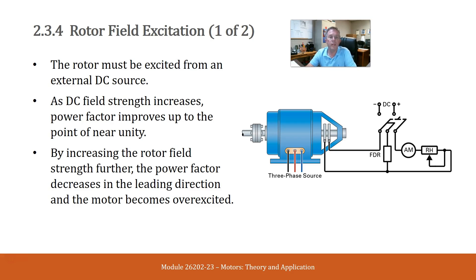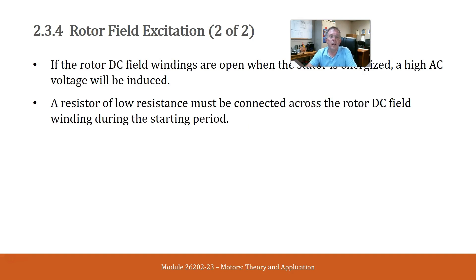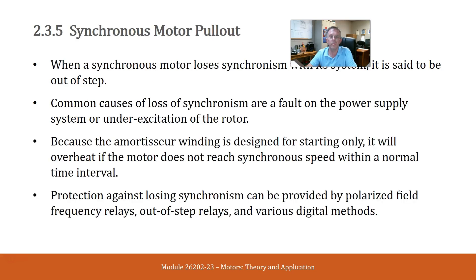Rotor field excitation. The rotor must be excited from an external DC source. As DC field strength increases, power factor improves up to the point of near unity. By increasing the rotor field strength further, the power factor decreases in the leading direction and the motor becomes overexcited. If the rotor DC field windings are open when the stator is energized, a high AC voltage will be induced. A resistor of low resistance must be connected across the rotor DC field winding during the starting period. When a synchronous motor loses synchronism with its system, it is said to be out of step. Common causes for loss of synchronism are a fault on the power supply system or under-excitation on the rotor.